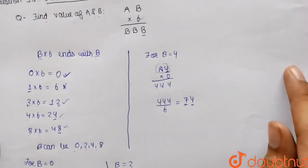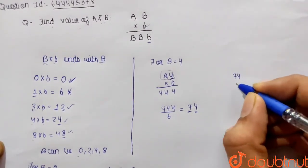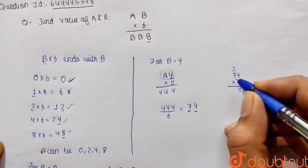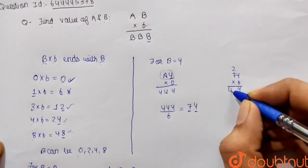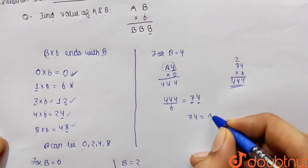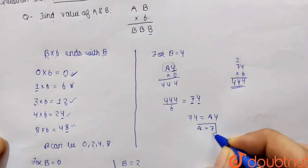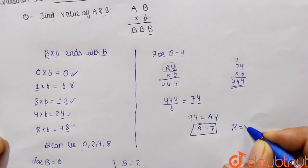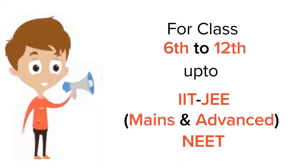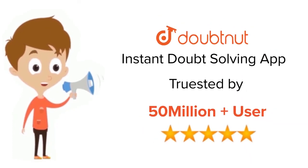Verifying: 74 multiplied by 6 — 4 sixes are 24, carry 2; 7 sixes are 42, plus 2 is 44 — giving 444. This confirms the answer. So a equals 7 and b equals 4. For class 6 to 12, IIT JEE and NEET level — trusted by more than 5 crore students, download the DoubtNet app today.